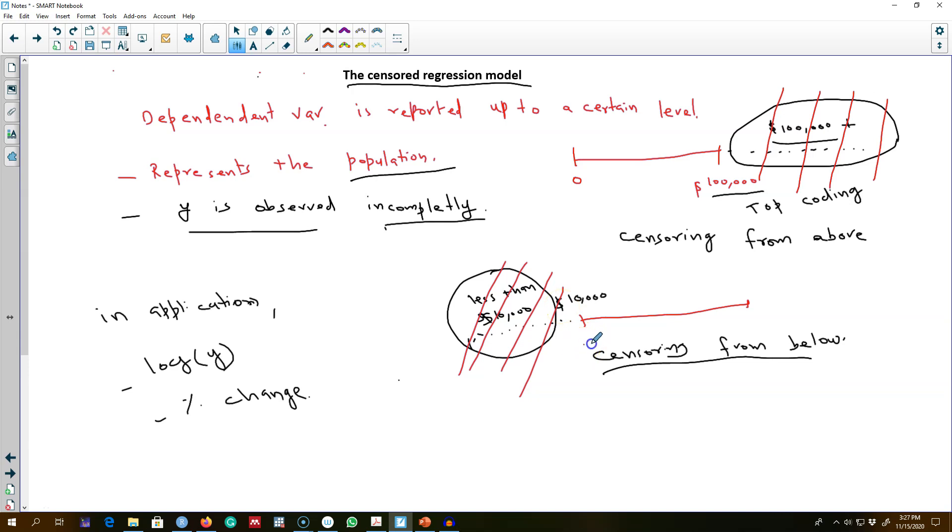So essentially, our sample is not representing the population, which means we are losing a lot of information that we did not include in our sample in this section. And our number of observations will be less than the censored data. So this is the main difference between censored regression model and truncated regression model.